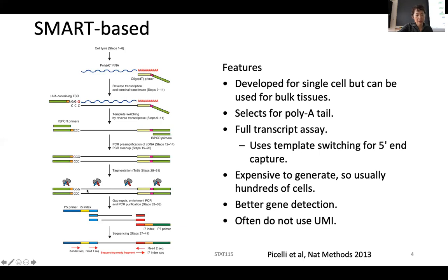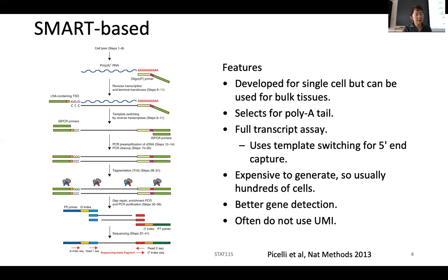This approach can amplify any small amount of RNA and can cover the whole transcript — some reads will cover the middle, some the beginning, some the end. The assay is quite expensive because you have to make an RNA sequencing library for every single cell, so an experiment with hundreds of cells is already a pretty big experiment. In terms of gene detection, it's slightly better — it can probably detect 6,000 to 8,000 genes — and usually there is no need to use UMI, which we'll talk about in the next slide.